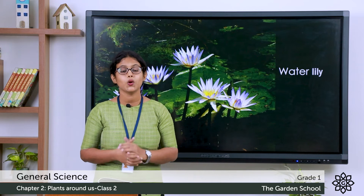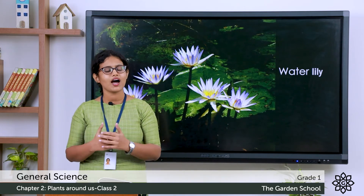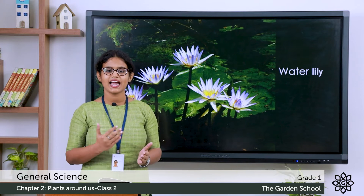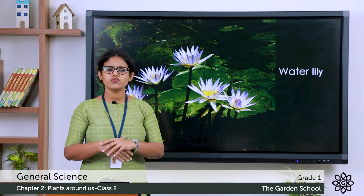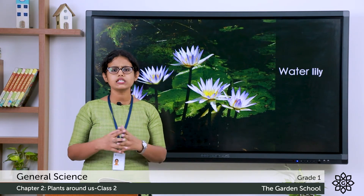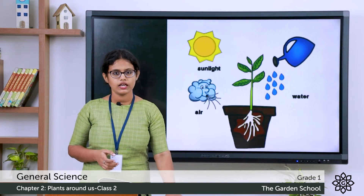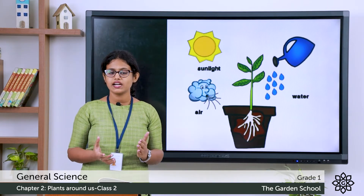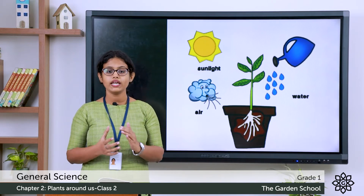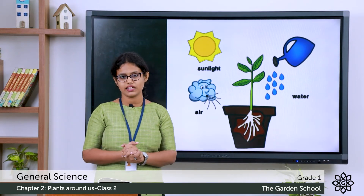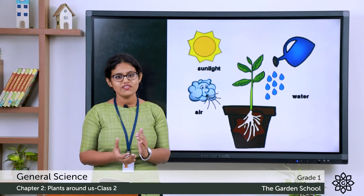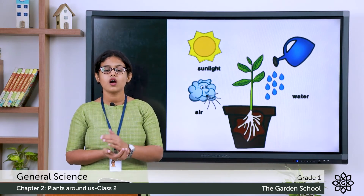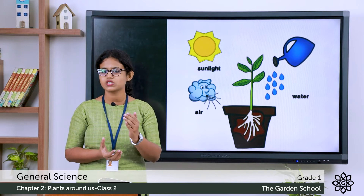So what did we learn today? We learned about where plants grow — plants grow on land and in water. For a plant to grow, it needs air, water, sunlight and food. Why? Because a plant is a living thing, and for a living thing to grow, it needs proper air, water, food and sunlight.